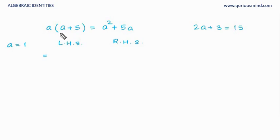So, replace a is equal to 1 in LHS, I get 1 in bracket 1 plus 5, that is 1 in bracket 6 and the value is 6. So, LHS is equal to 6 and let's see what is RHS. RHS is 1 square plus 5 into 1 which is equal to 1 plus 5 and that's also equal to 6. So, we see that both LHS and RHS are same, 6.